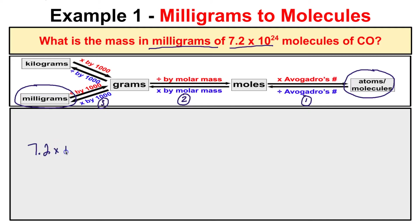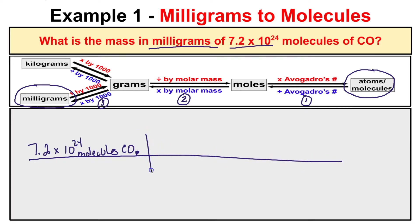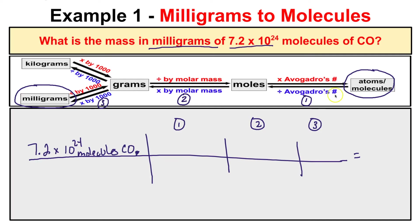So the starting information is 7.2 times 10 to the 24th molecules of carbon monoxide. In the first step we want to convert this to moles, in the second step we convert to grams, and in the third step we convert to milligrams. This is going to be a three-step process before we can get our final answer.